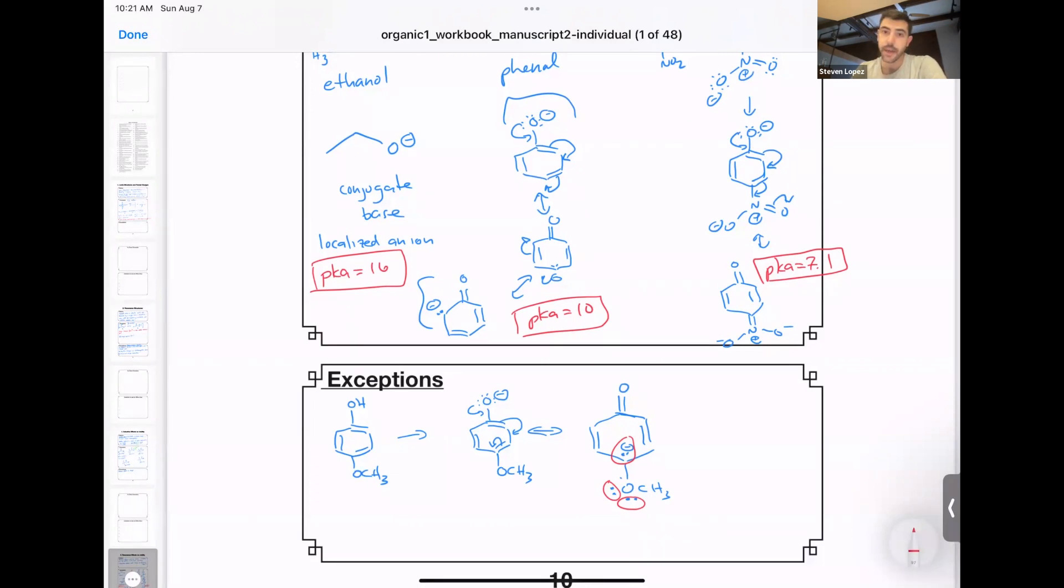The oxygen of the methoxy is also electron withdrawing inductively, right? So this helps to stabilize the negative charge of phenoxide through induction, but induction effects are a lot weaker than resonance effects.